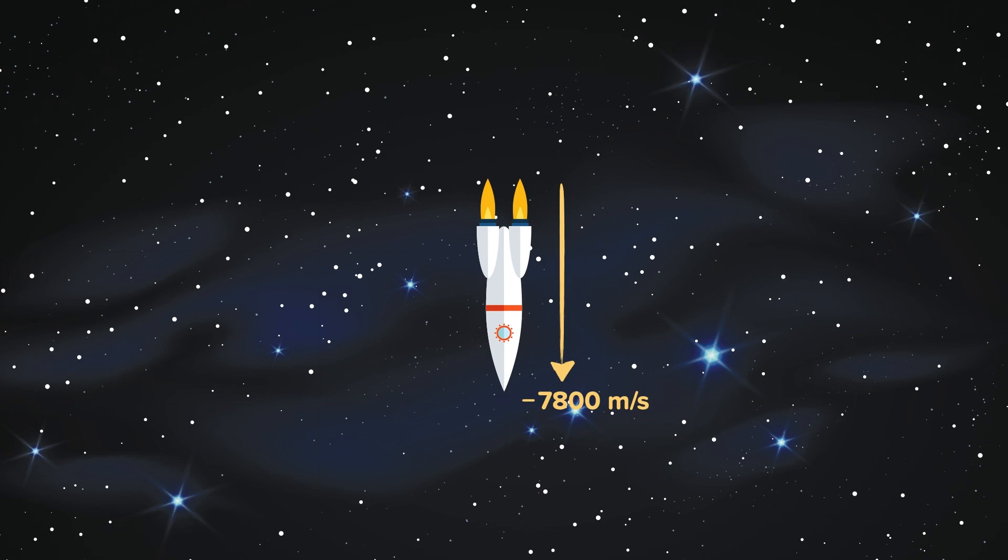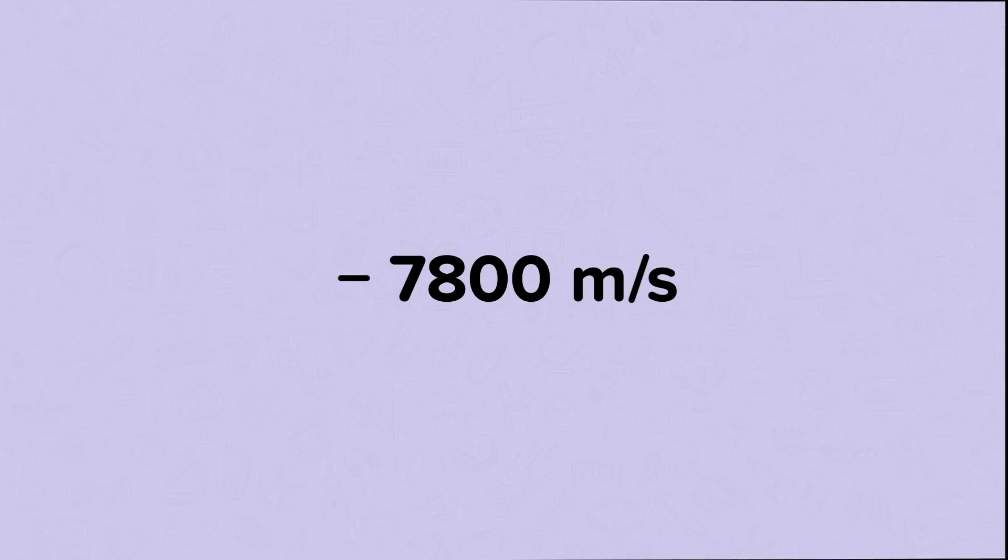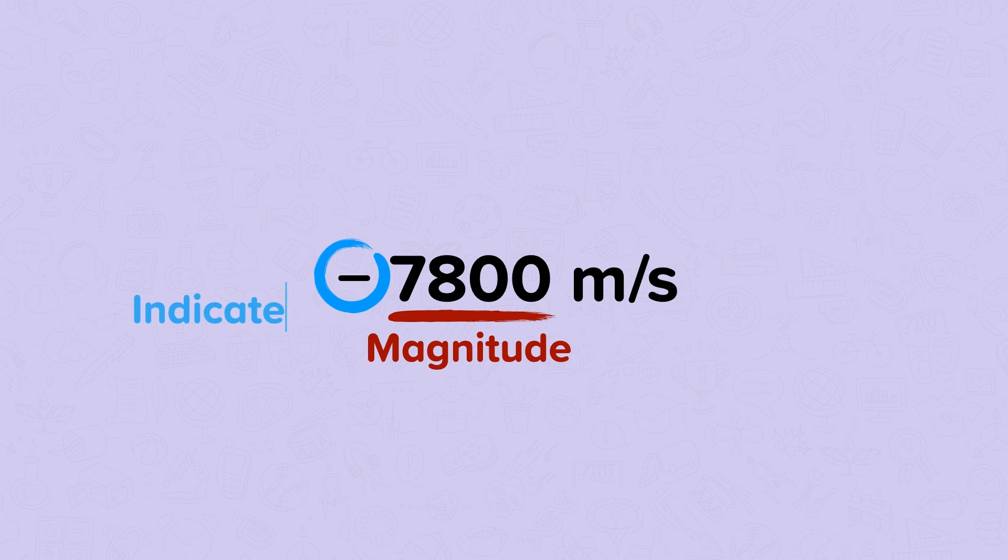The number represents the magnitude of velocity, which is essentially the object's speed. If a sign is provided in front of the number, it can indicate the direction an object is travelling relative to other objects in motion.